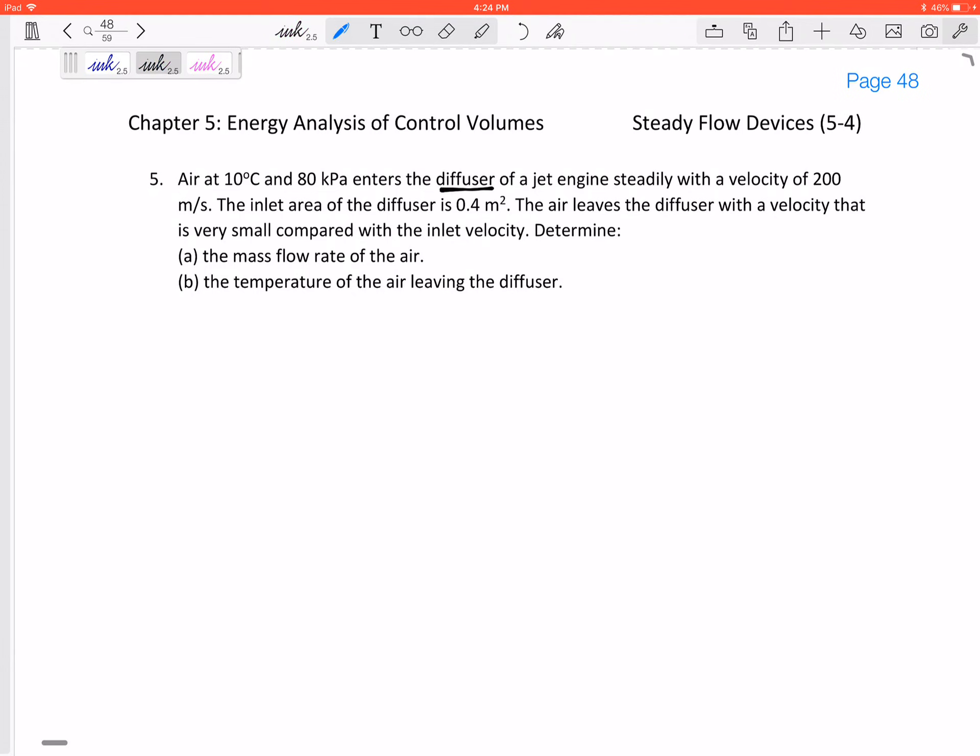A diffuser will go from a small cross-sectional area of 0.4 meters squared to a larger one, and the velocity will decrease. So up here at the inlet we've got 200 meters per second velocity at 80 kPa, 10 degrees C.